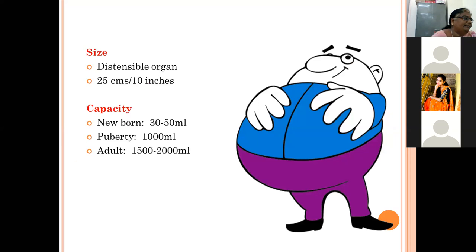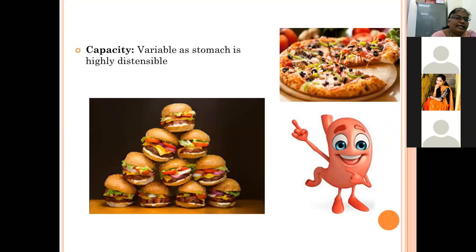The size of the stomach is distensible. Its normal size is about 25 centimeters or 10 inches. Capacity in newborns can accommodate 30 to 50 ml of fluid. In adults the capacity is about 1.5 to 2 liters, and the stomach capacity is variable depending on the individual.